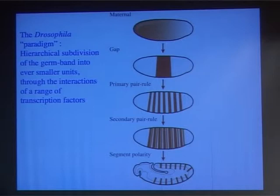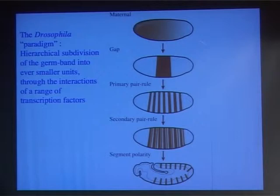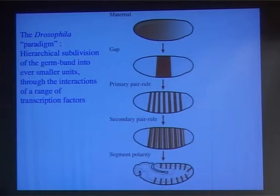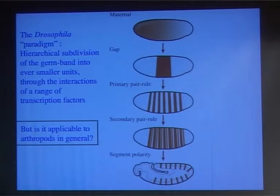Until about 10 or 15 years ago, what we knew about segmentation in arthropods came from the so-called Drosophila paradigm. Anyone who's taken a course in developmental biology has seen this scheme. In Drosophila, segments are generated through a sequential hierarchical process. First, the axis is defined through maternally deposited factors. Then gap genes divide the embryo into broad domains. Their interactions activate pair-rule genes, which divide the embryo into pairs of segments. The pair-rule gene interactions ultimately generate the actual segments and activate segment polarity genes, each expressed in a single segment.